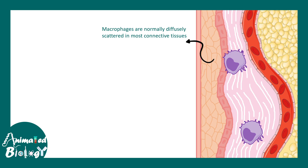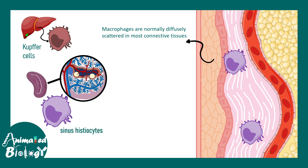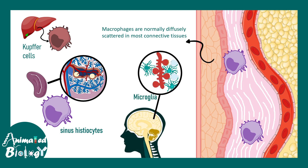Macrophages are normally diffusely spread across connective tissues, but there are tissue-specific macrophages as well. For example, the liver has Kupffer cells, the spleen has sinus histiocytes, and the brain has microglia.